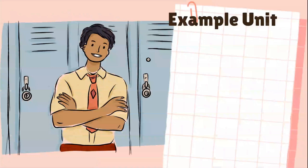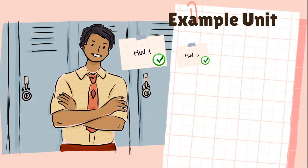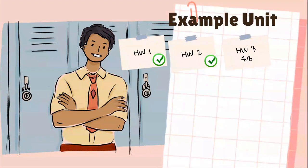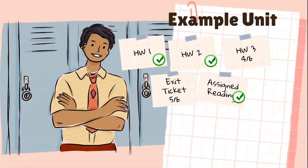So let's take a look at an example unit. You might have a couple of homeworks — some of these might just be collected and some might be scored. Then your teacher might decide it's time for an exit ticket to see what you know on that particular standard. The teacher sees there's one little misconception going on and assigns a reading to help clear that up. And then you have a quiz — great job, nine out of ten. You're clearly on your way to mastery.